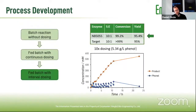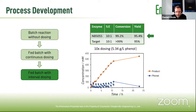We further improved our fed-batch. Before we used continuous dosing, then we changed to a more suitable interval dosing — 10 times dosing. This also increased the reaction further so that we had a high yield of above 95%, which is then already really applicable for commercial-scale production.